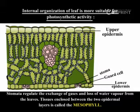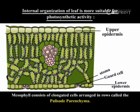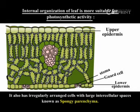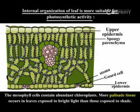Tissues enclosed between the two epidermal layers are called the mesophyll. Mesophyll consists of elongated cells arranged in rows called the palisade parenchyma. It also has irregularly arranged cells with large intercellular spaces known as spongy parenchyma. The mesophyll cells contain abundant chloroplasts.